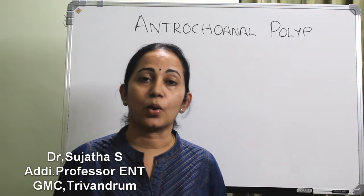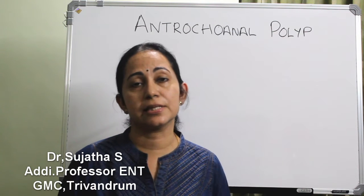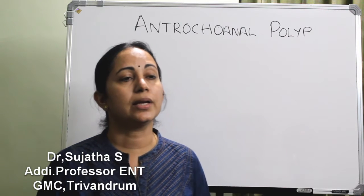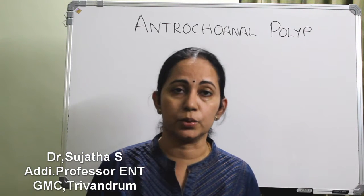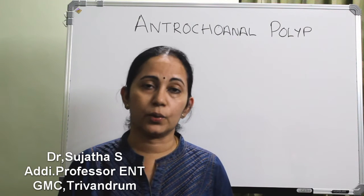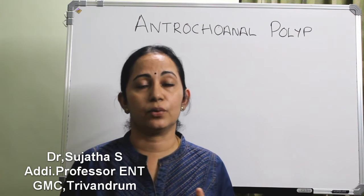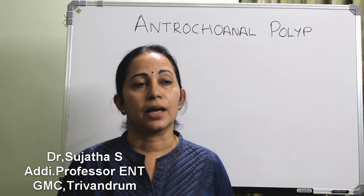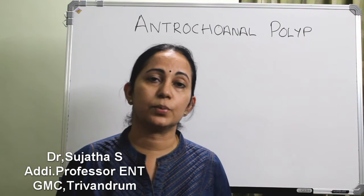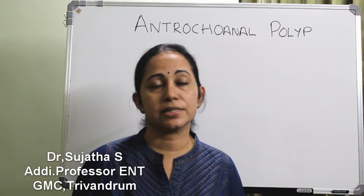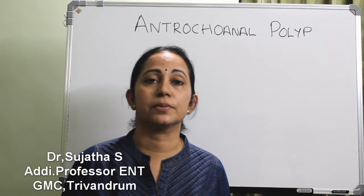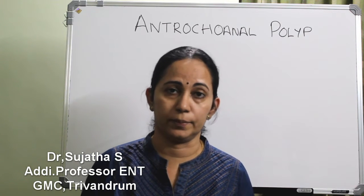After nasal polyposis, the commonest polypoidal mass seen in the nose is an antrochoanal polyp. It is a unilateral polyp which goes to the choana or the posterior nose. Today I will explain about antrochoanal polyp, covering the etiology, pathogenesis, histopathology, investigations, treatment, and the differences between an ethmoid polyp and an antrochoanal polyp.